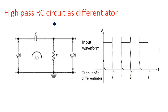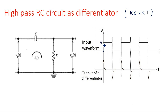For the high pass RC circuit to act as a differentiator, RC must be very much less than the input signal period T. When a square waveform is applied under this condition, the capacitor takes very short time to charge and discharge — it charges and discharges almost immediately. So when the input jumps from 0 to V volts, the output also rises to V volts since the capacitor does not block sudden changes.